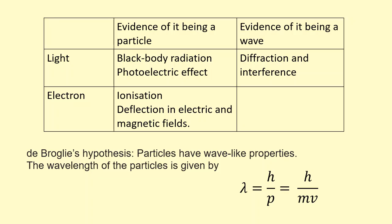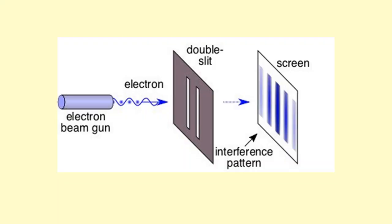So if a particle can behave like a wave, he suggested maybe electrons can diffract as well. And later this was found to be true. When you direct a beam of electrons at a double slit like this, an interference pattern is formed. This can only be explained if the electron is behaving as a wave going through both of the slits and interfering with itself.